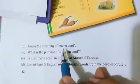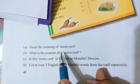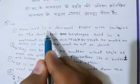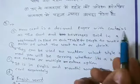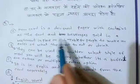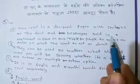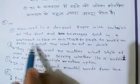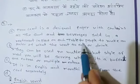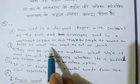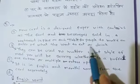Now look at this menu card. Question a: guess the meaning of 'menu card.' The answer is: a menu card is a designed paper which contains all the food and beverages available in a restaurant, placed on each table for people to make an order of what they want to eat or drink.